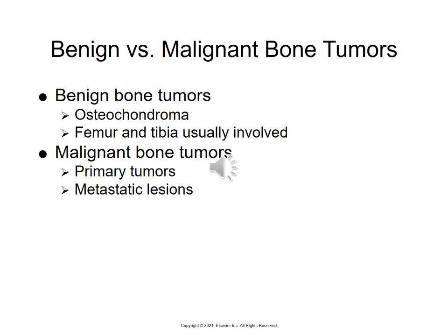Regarding benign versus malignant bone tumors: bone tumors are either cancerous or not. The most common benign bone tumor is the osteochondroma, typically involving the femur and tibia. If a bone tumor is malignant, it is classified as either primary or metastatic. Most bone tumors are metastatic, meaning they come from cancer originating somewhere else in the body. The main problem with any kind of bone cancer is pain, and it is also a cause of falls and fractures.